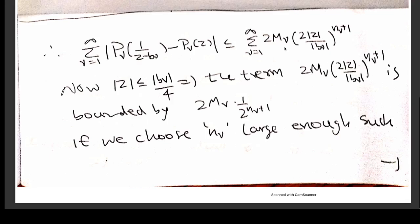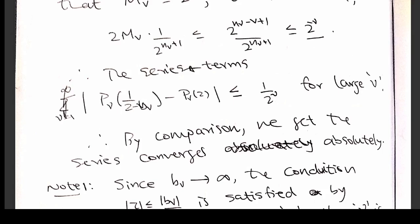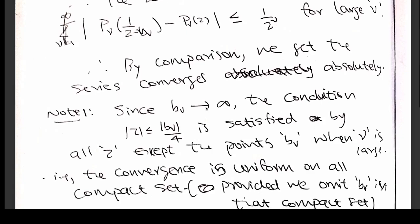You get this estimate, rigorously done here. What happens is that you choose |b_ν| large because b_ν diverges to infinity, and n_ν can be anything — you can choose it large enough because this Taylor development is applicable for any integer. With that large choice, the terms in the series will be bounded by 2^(−ν). Therefore, by the comparison test, we get that the series converges absolutely. So small p_ν is chosen so that the series becomes convergent.